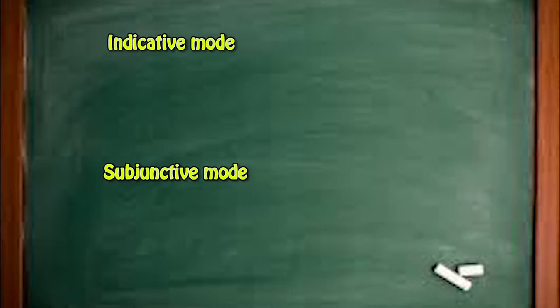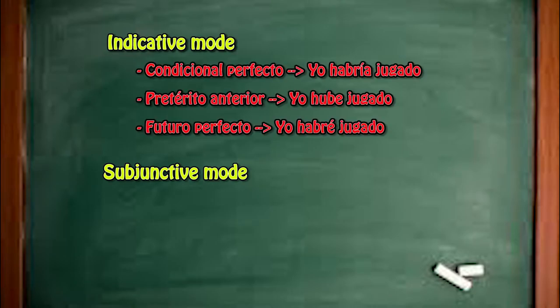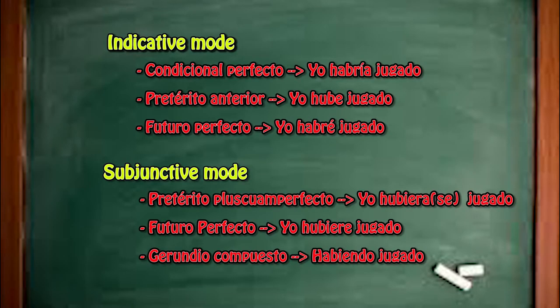So, these are the verbal tenses we should already know. Now let's see some others that we will cover in future videos. In the indicative mode: condicional perfecto — yo habría jugado; pretérito anterior — yo hube jugado; futuro perfecto — yo habré jugado. In the subjunctive mode: pretérito pluscuamperfecto — yo hubiera jugado, yo hubiese jugado; futuro perfecto — yo hubiere jugado. And the gerundio compuesto — habiendo jugado. As you can see, the verb haber is used across many verbal tenses!